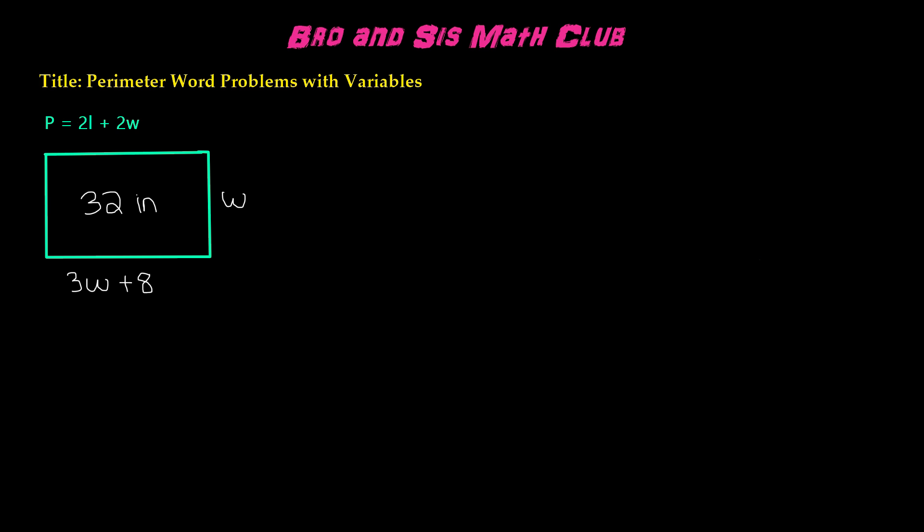Here we have a rectangle with a perimeter of 32 inches. We have to find the value of the length and the width. The perimeter for a rectangle is 2 times the length plus 2 times the width.